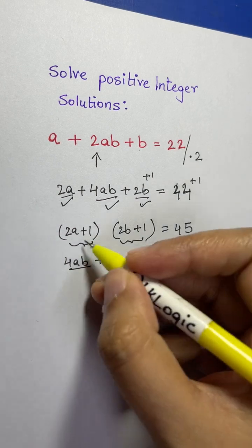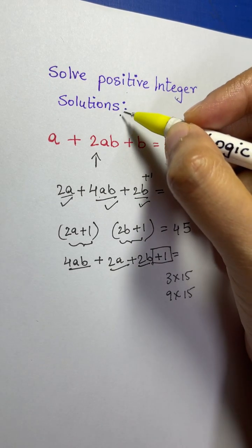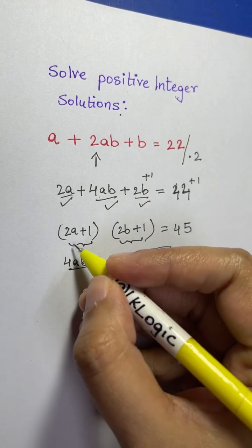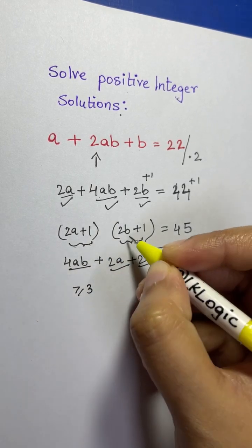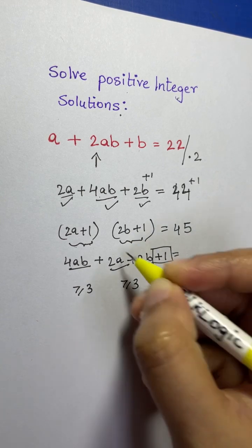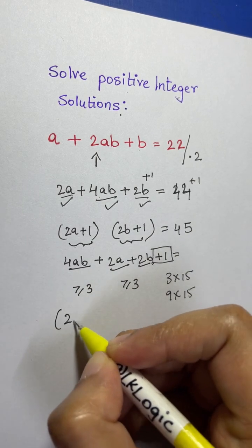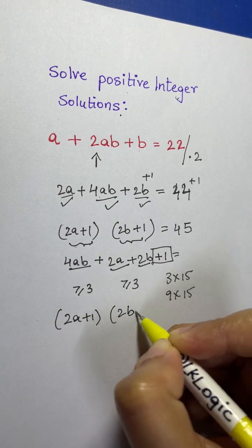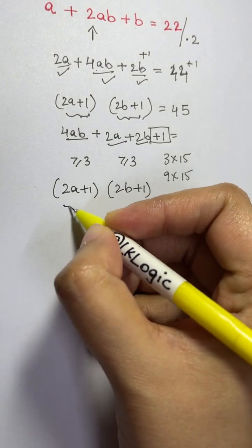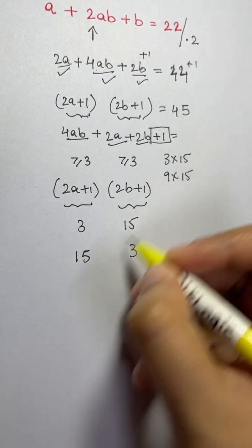Since we want positive integer solutions, a ≥ 1 and b ≥ 1. If a = 1, then 2(1) + 1 = 3, so (2a + 1) ≥ 3. Similarly (2b + 1) ≥ 3. So both factors must be at least 3. Writing out the valid factor assignments: (2a + 1) = 3 and (2b + 1) = 15, or vice versa 15 and 3, and also 9 and 5.